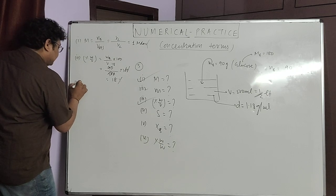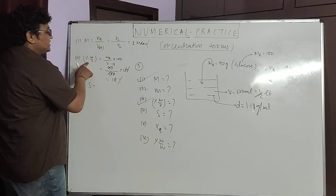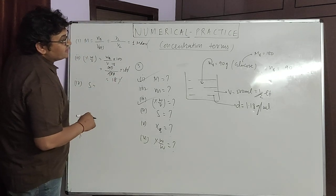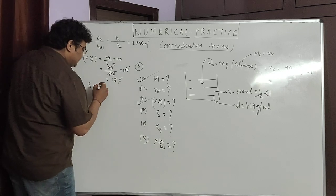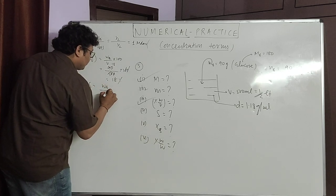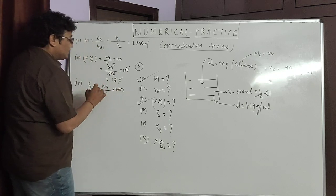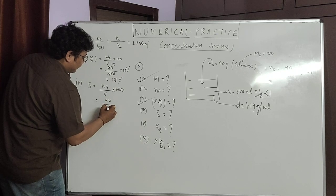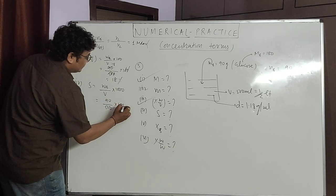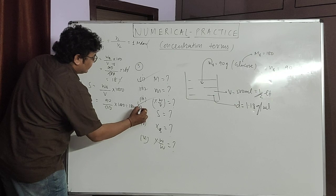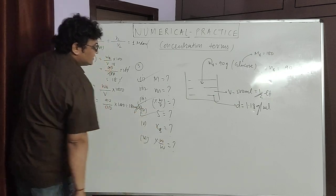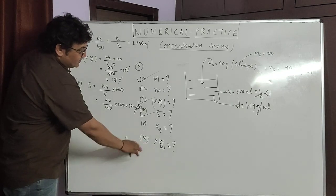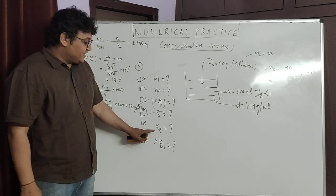Next is strength, the fourth part. Strength = percentage weight by volume multiplied by 10, giving 180 grams per liter. By definition using weight of solute per liter: 90 grams per 500 ml = 180 grams per liter. Next part: mole fraction and molality — note these are temperature-independent concentration terms.